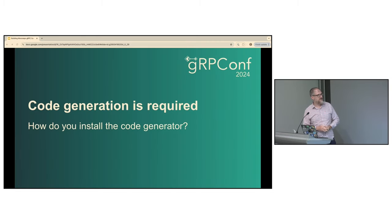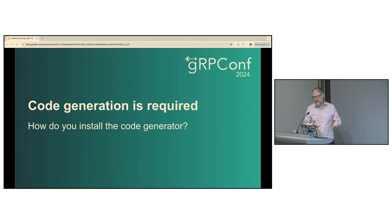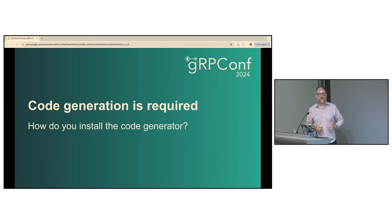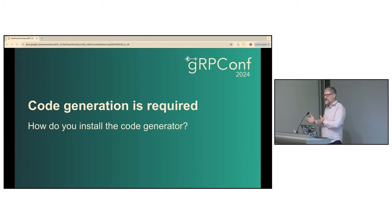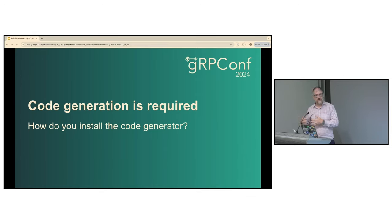I'm going to keep coming back to the concept of code generation — this is the core problem that Bazel is here trying to solve. I assume everybody here is familiar with the problem: you write .proto files, and I've never heard of anyone who reads them at runtime. We are all doing code generation to produce client libraries for whatever programming language we use on the server, and clients are expected to do the same thing to generate client libraries so they have that stub layer on top of the gRPC channels.